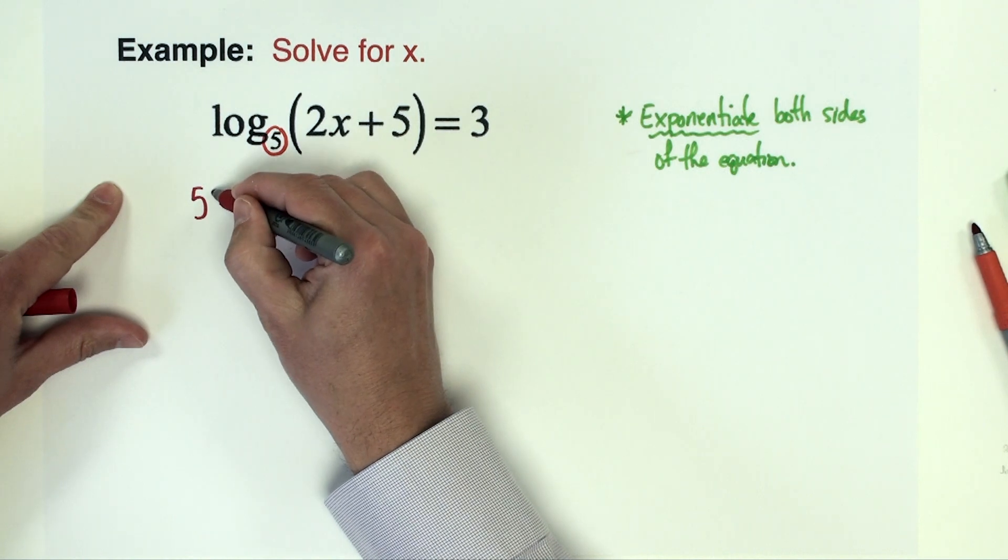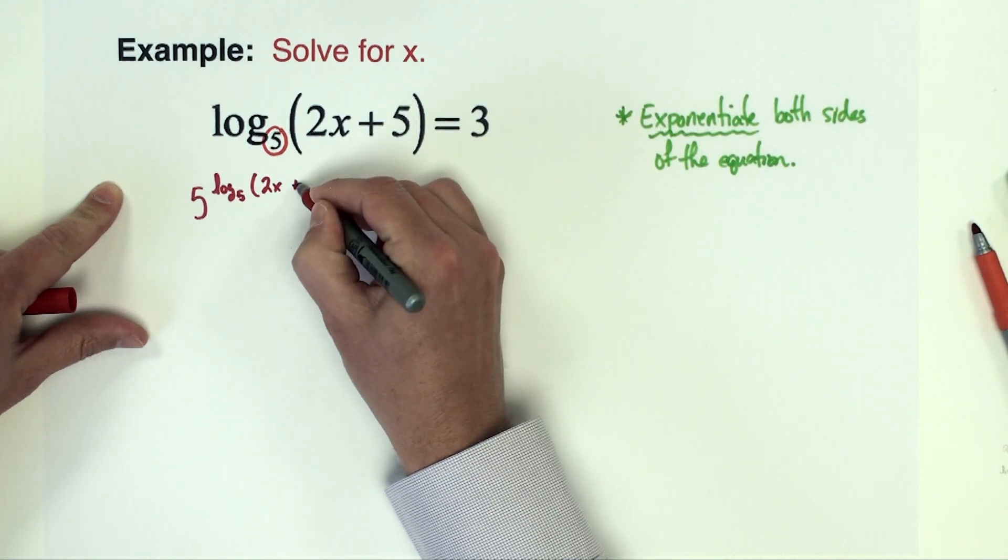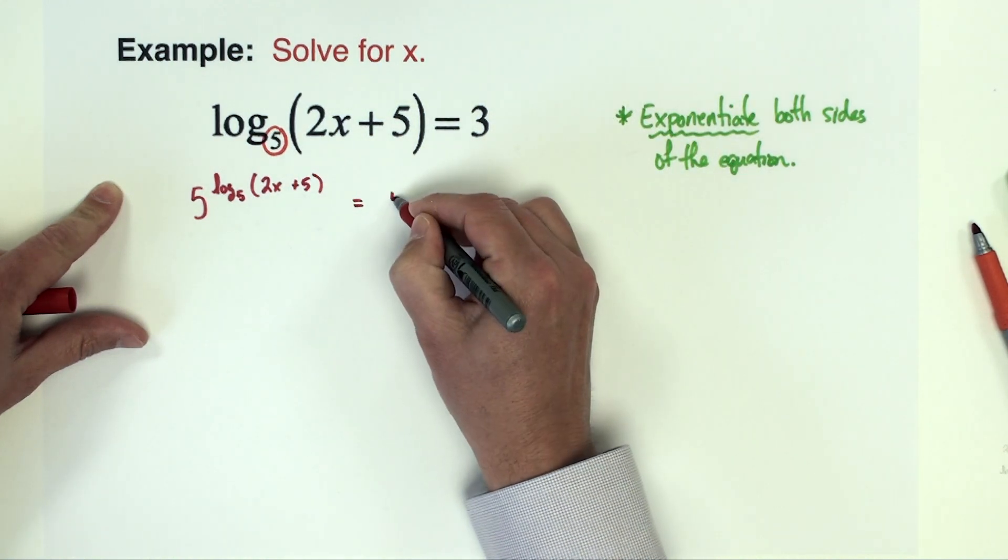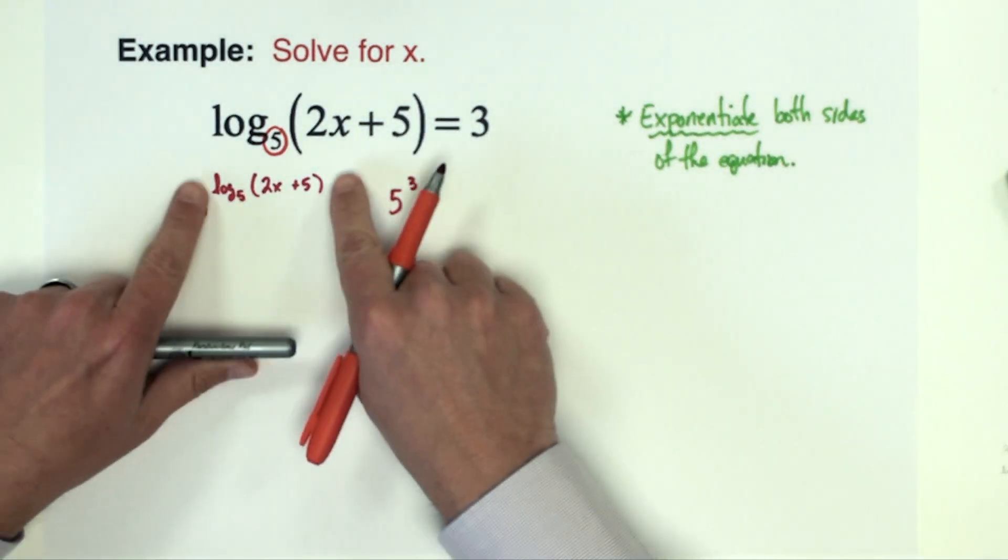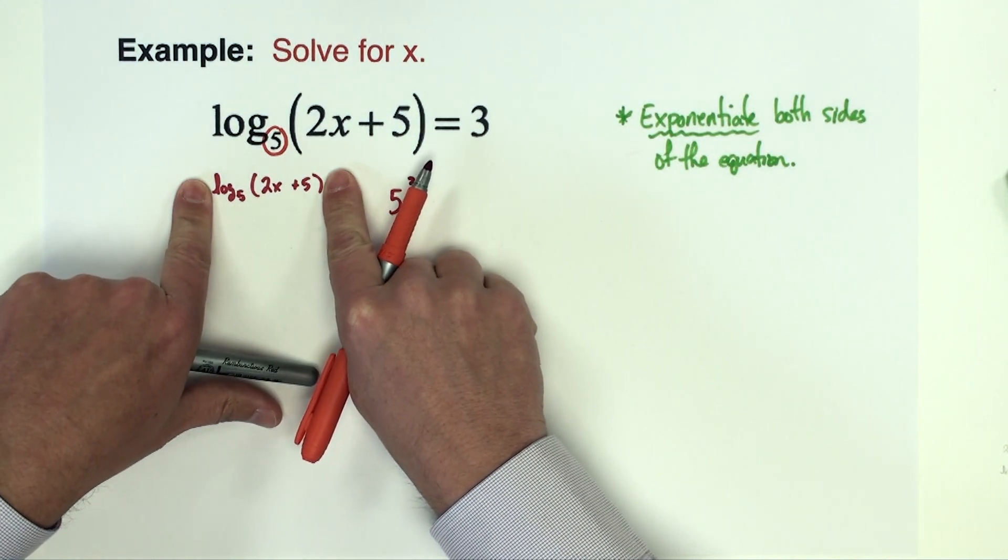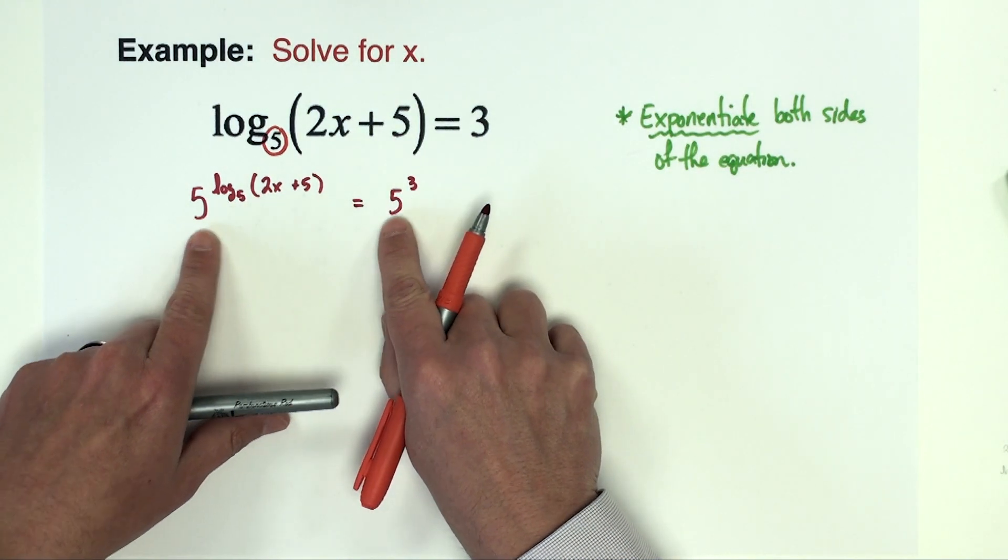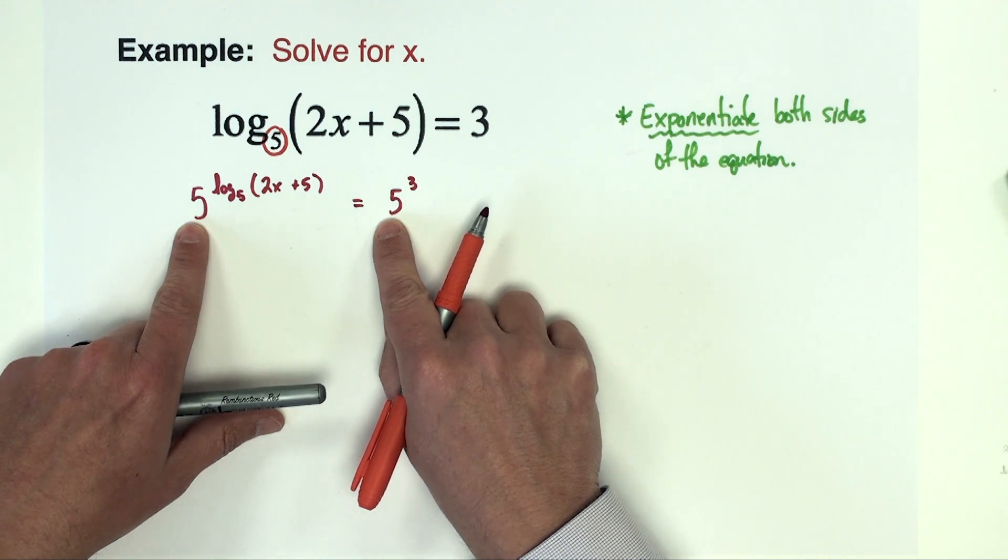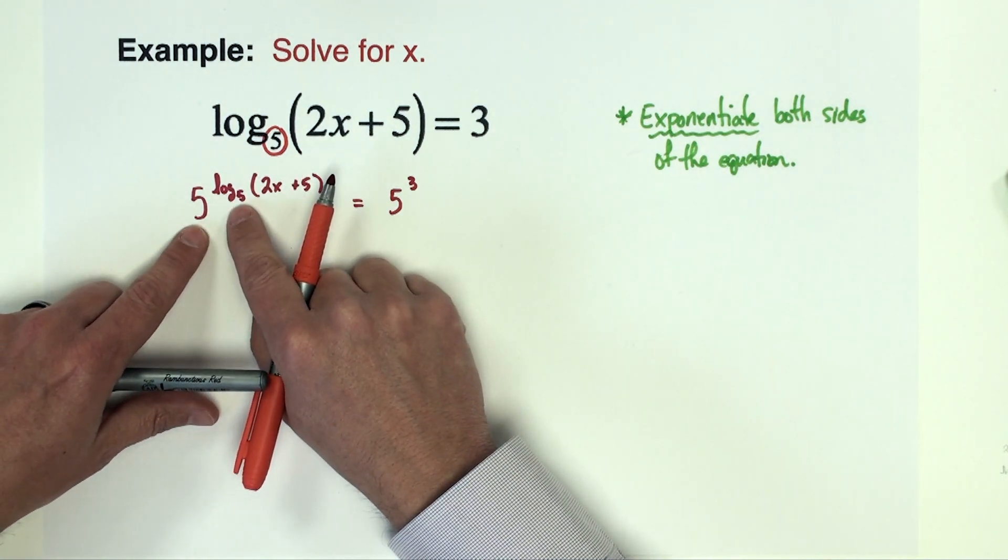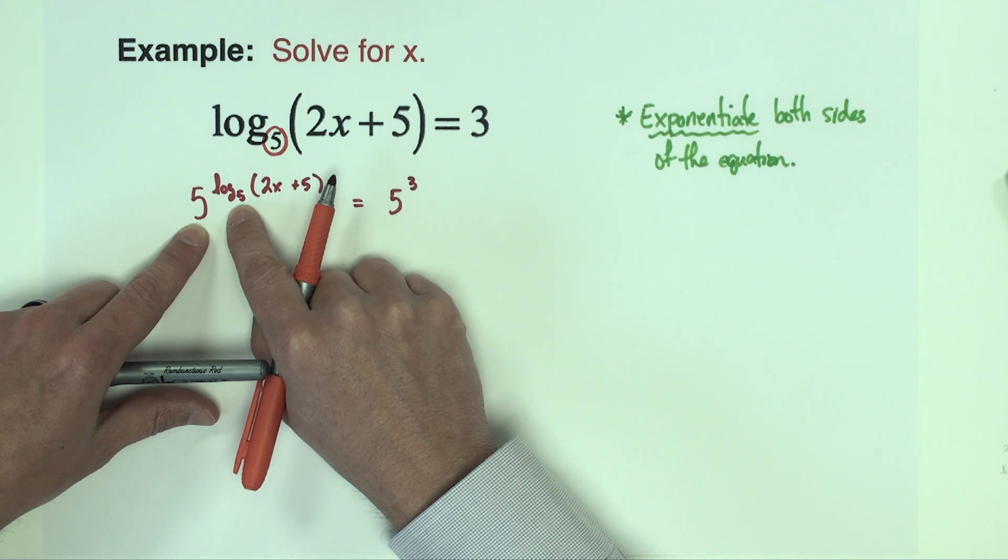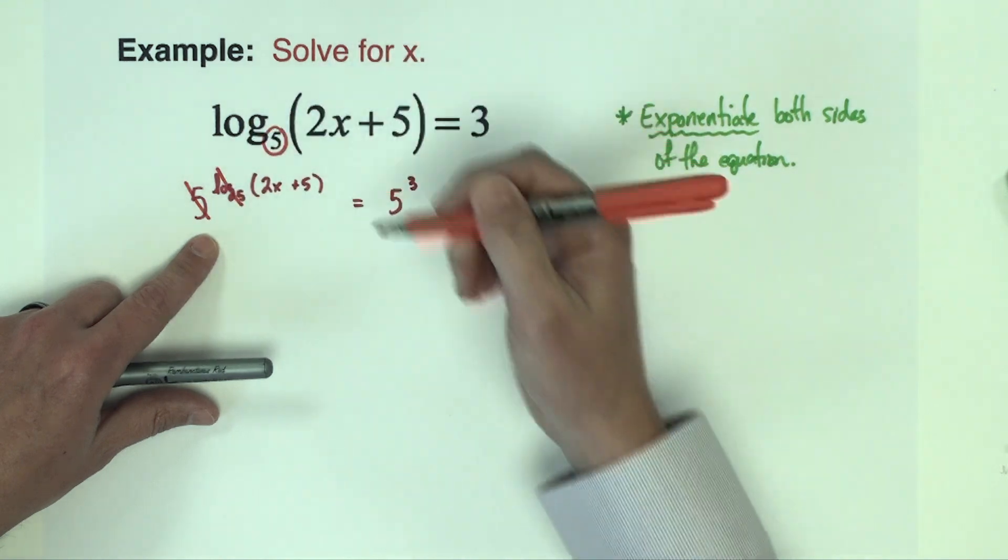So I'm going to rewrite this problem. It's going to be 5 raised to the log base 5 of 2x plus 5 equals 5 raised to the third power. You can see the original equation that log base 5 of 2x plus 5 and 3 is still there, it's just now as exponents. Now the reason why I chose 5 is because I want these to match. One of our properties of logarithms is that when these match they're going to cancel each other out.